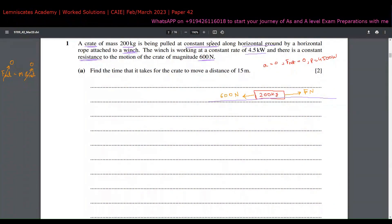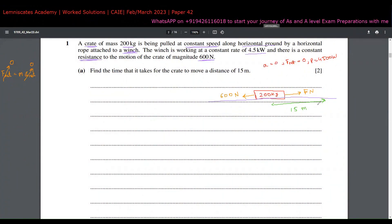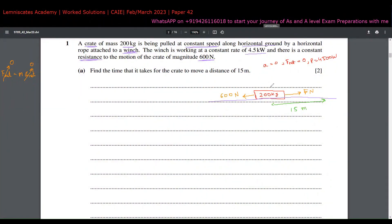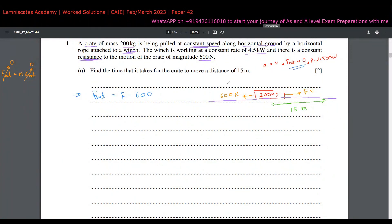Part A asks us to find the time for the crate to move 15 metres. To use the power formula I first need the driving force F. Since F_net = 0, we have F − 600 = 0, therefore F = 600 N.